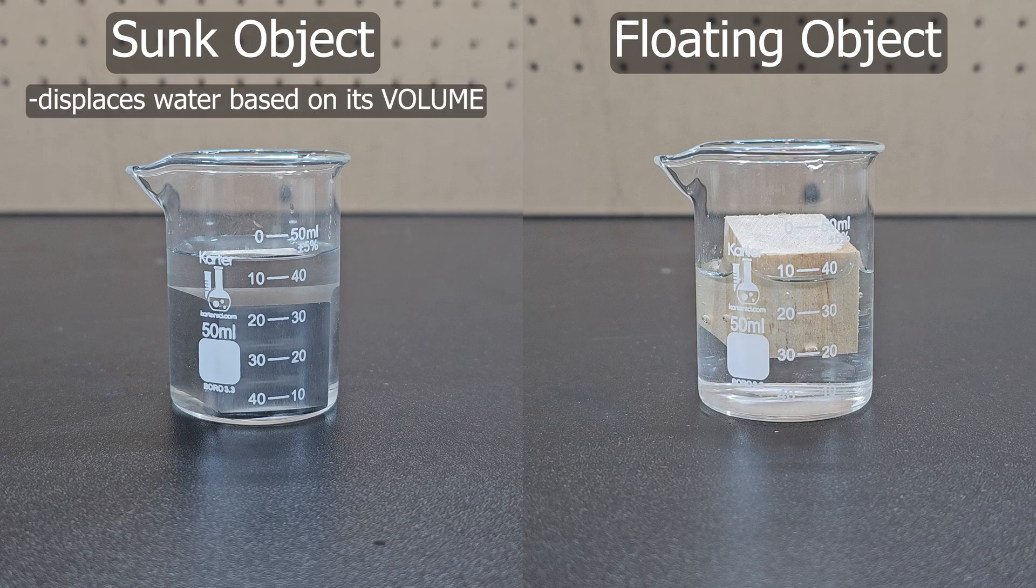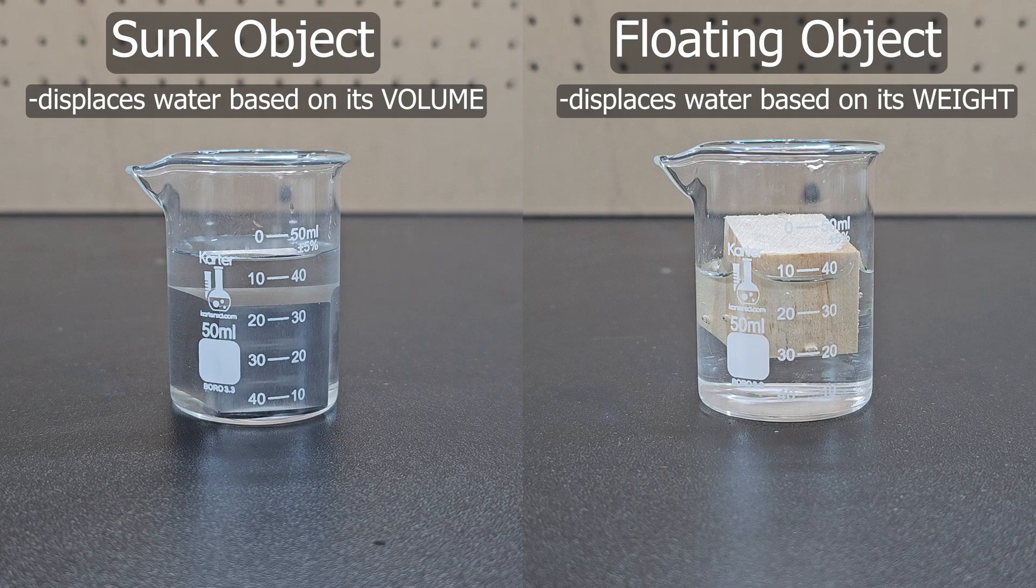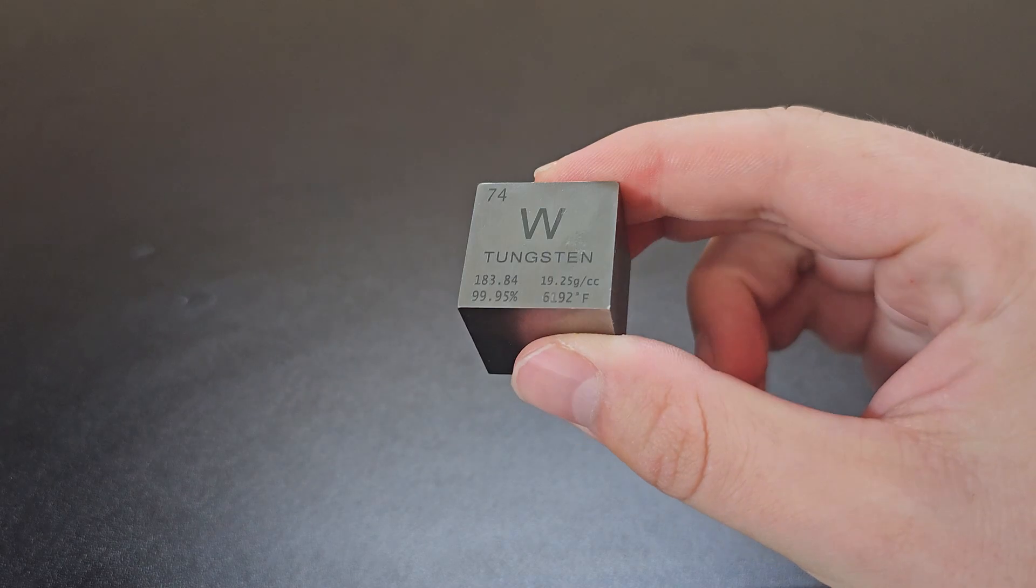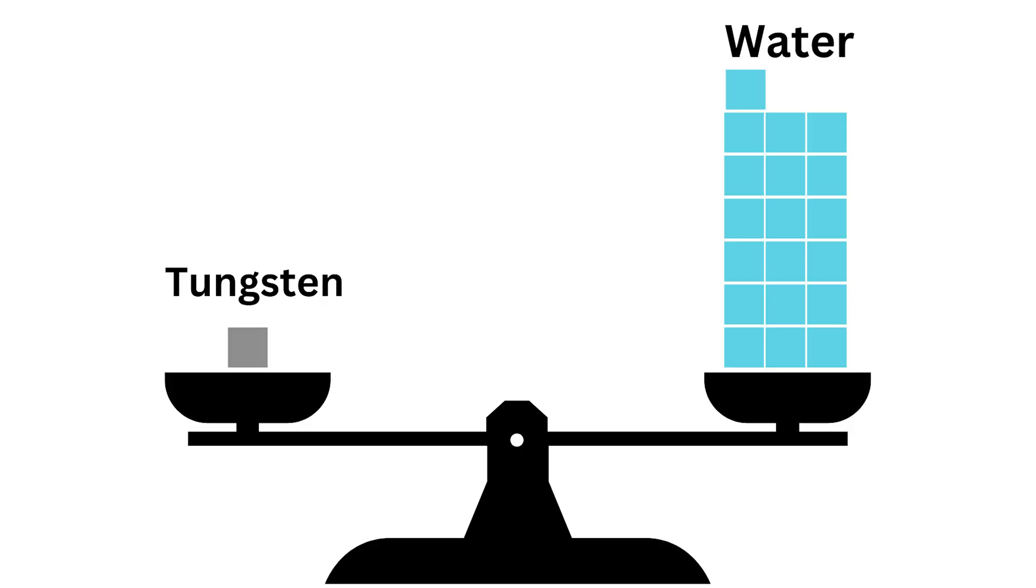A sunk object simply displaces its own volume. Meanwhile, to get an object to float, you need to displace enough water that it equals the weight of that object. In order to make the heavy tungsten cube float, you'd need to displace a little more than 19 cubes of water.